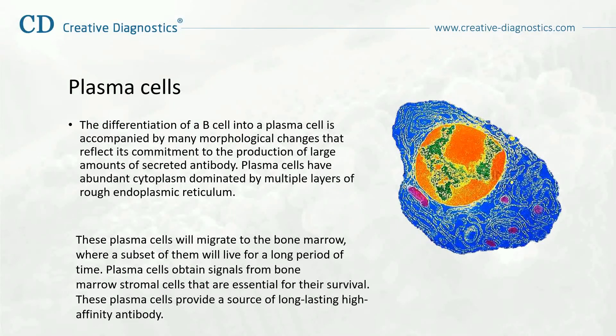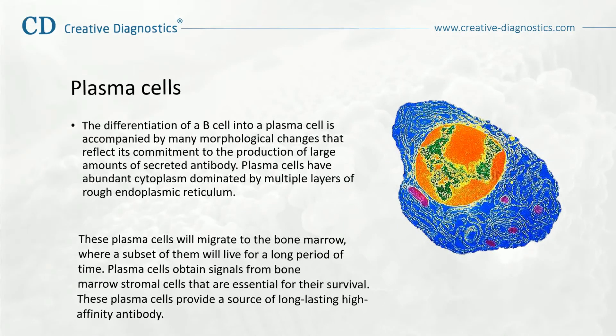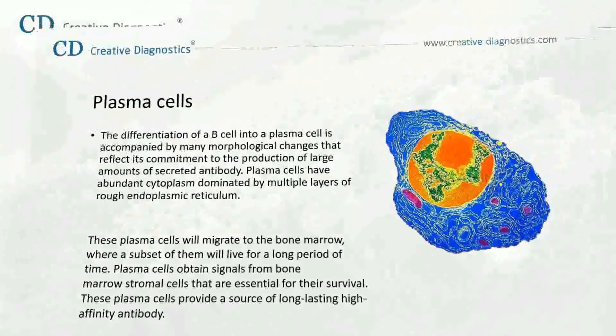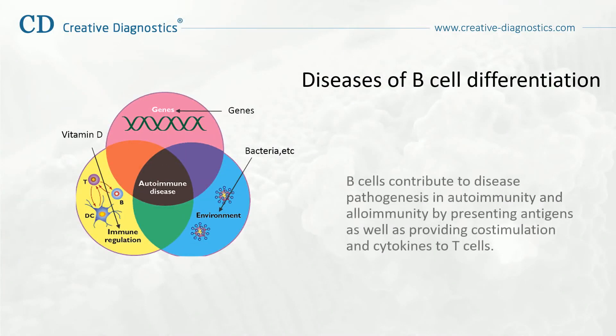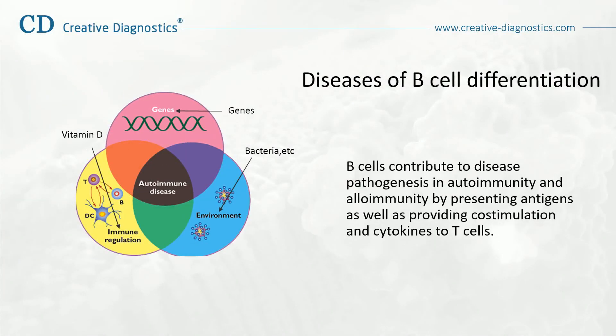B-cells contribute to disease pathogenesis in autoimmunity and alloimmunity by presenting antigens as well as providing costimulation and cytokines to T-cells. Vertebrates inevitably die of infection if they are unable to make antibodies.